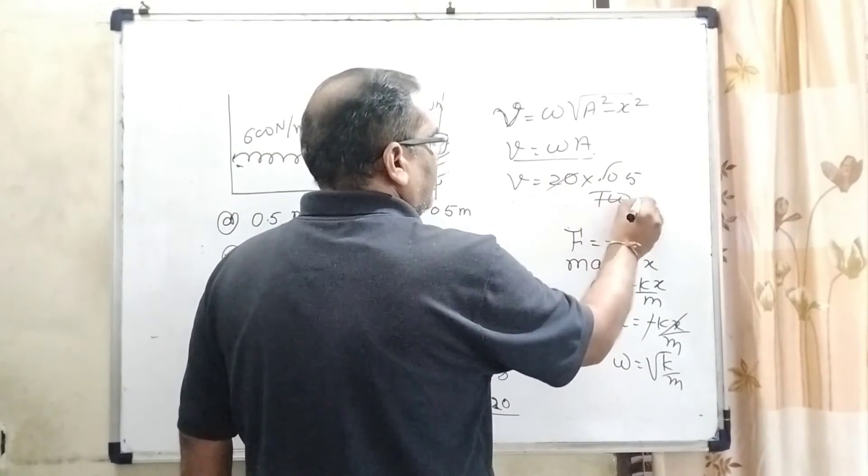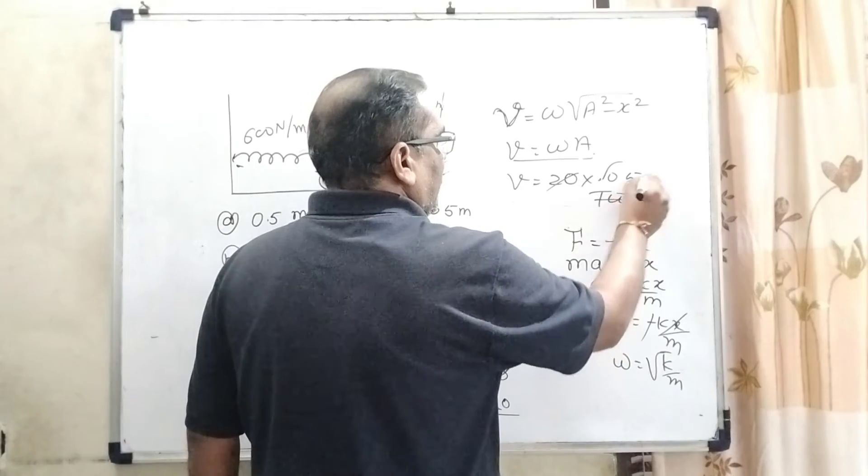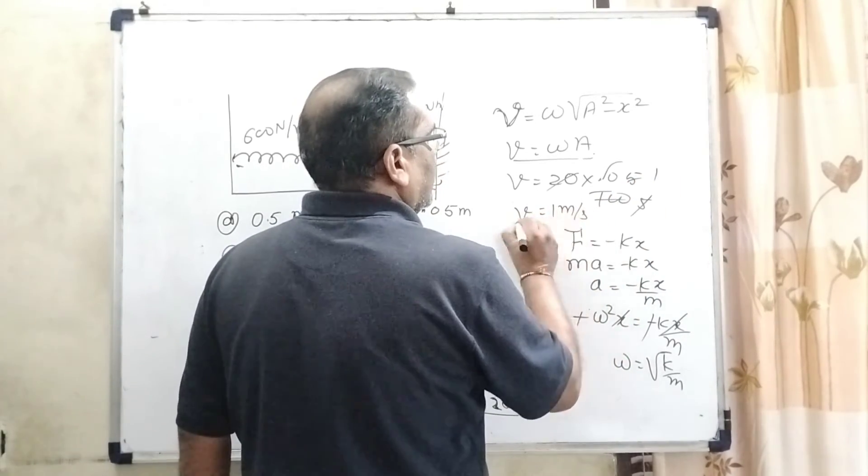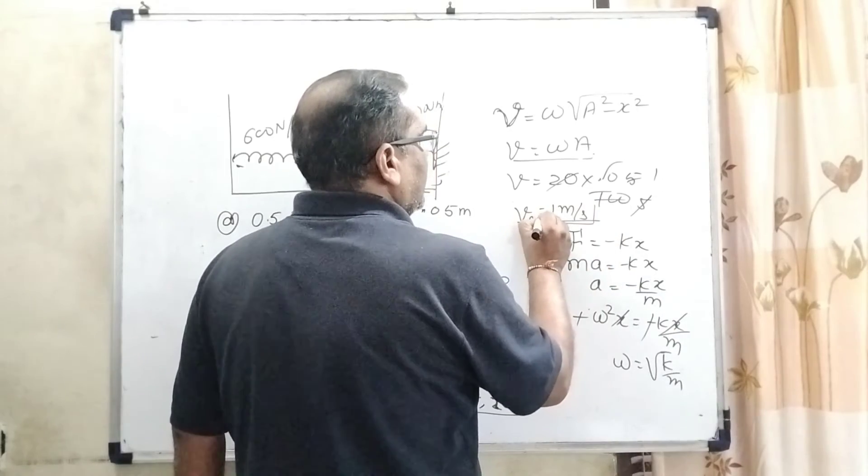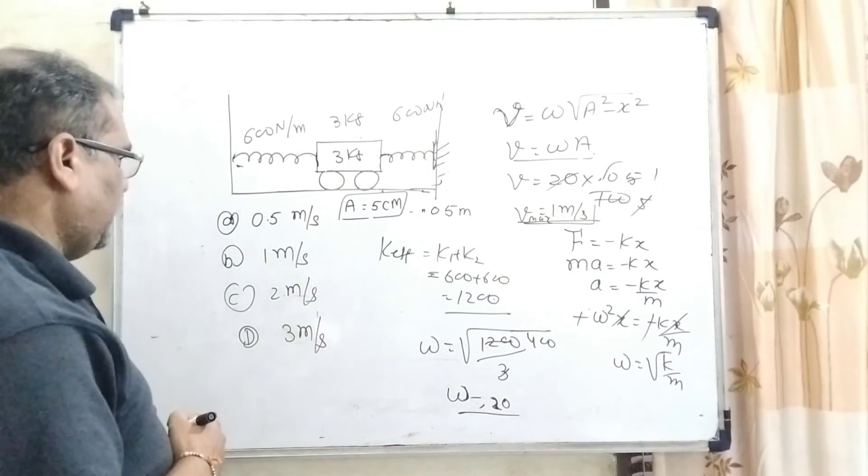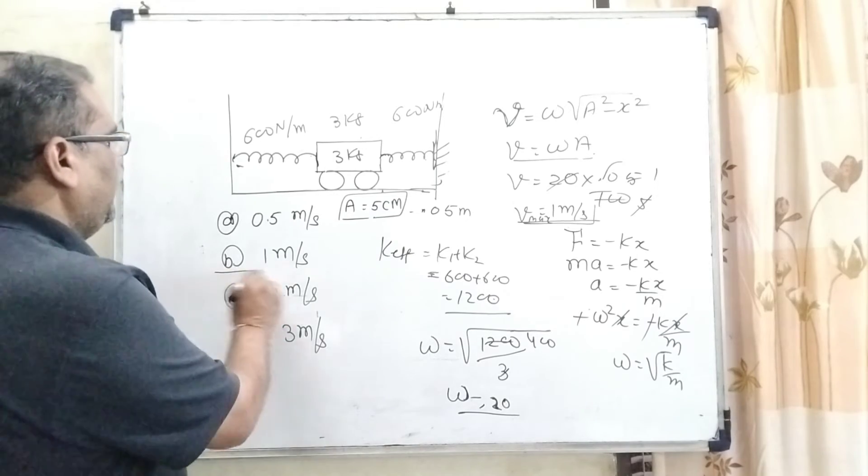So here, 25 times 4 is 100, 5 into 5. Cancel out, then v = 1 meter per second. Okay, that is maximum. So let's see which option is matched here. Option B is correct.